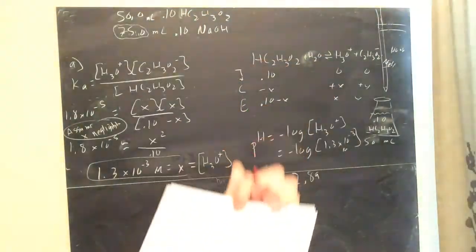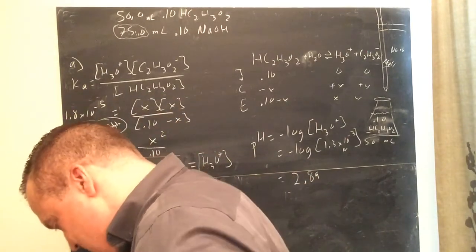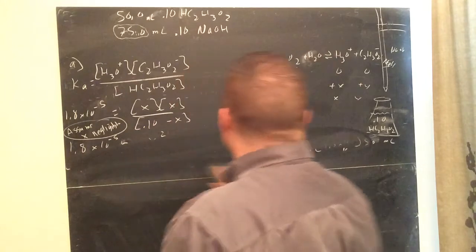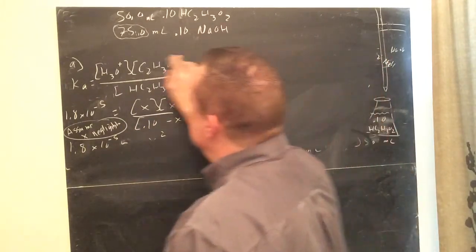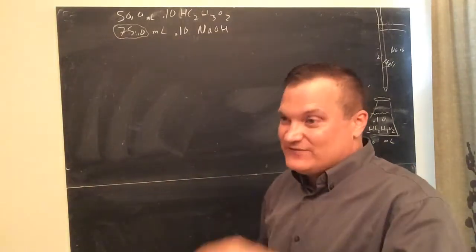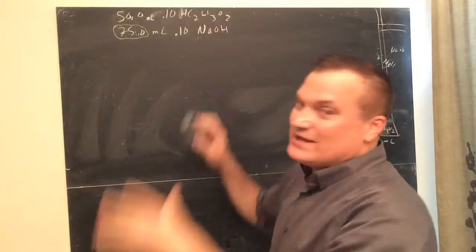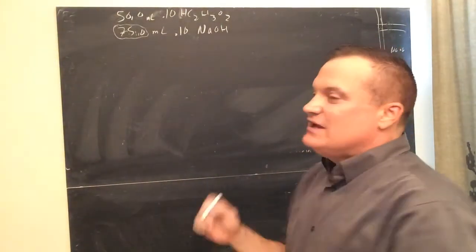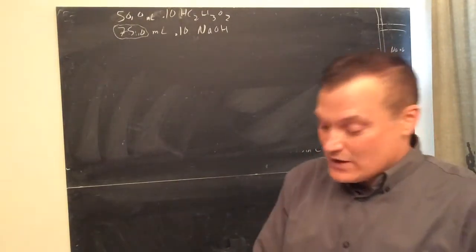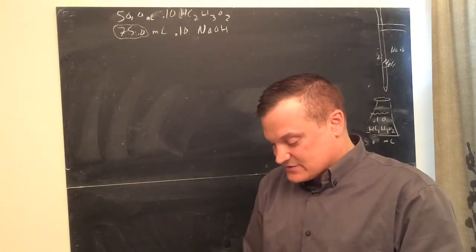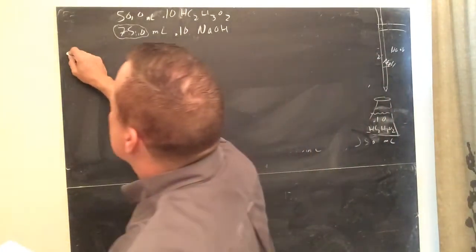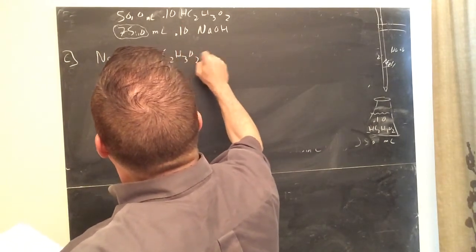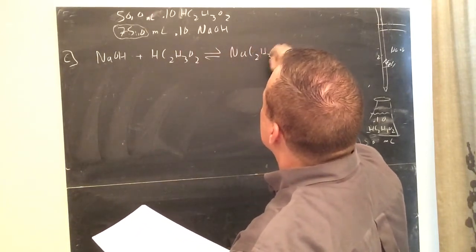Now let's move to part C — we'll skip B. Starting with the stoic box: NaOH plus acetic acid gives you sodium acetate and water. To get a general titration curve you need the beginning pH, the final pH, and the equivalence point — and one other thing I'll talk about in a minute.